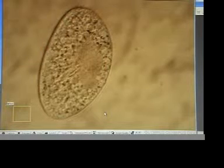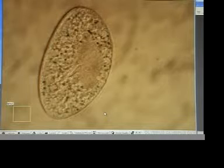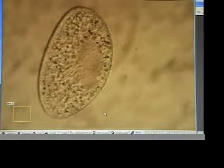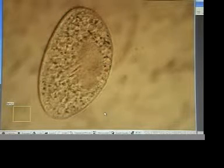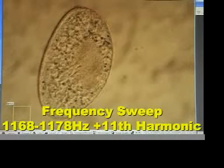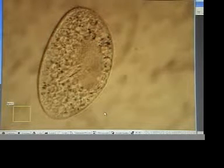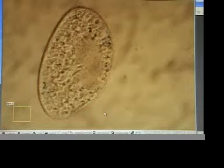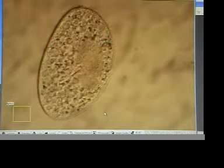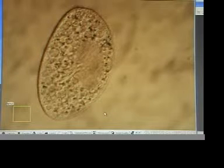He's gone through a series of three minute exposures starting at 1168, running up to 1177. We're now at 1177 plus the 11th harmonic. We're going to keep an eye on this guy and see what changes happen. We're looking at this paramecium from below using an inverted microscope. You can see there's a lot of celia action going on.